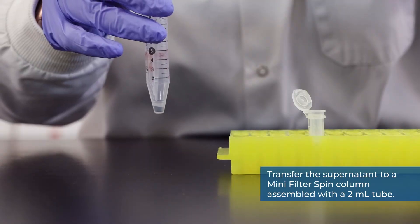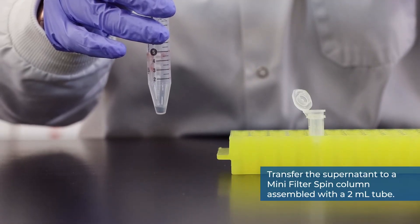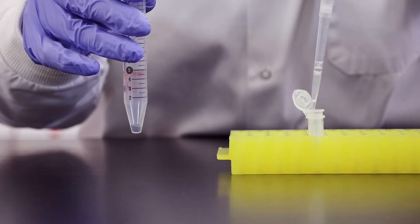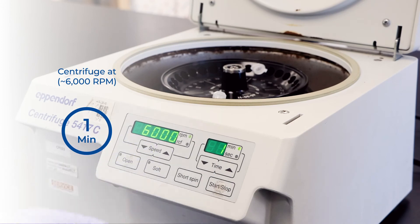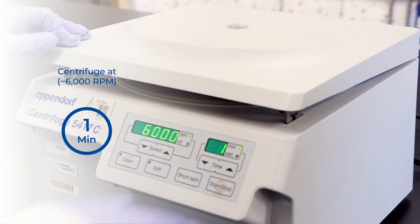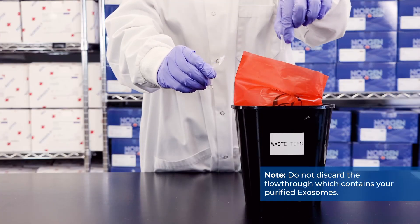Transfer the supernatant to a mini filter spin column assembled with a 2 milliliter tube and centrifuge for 1 minute at 6000 RPM. Do not discard the flow-through which contains your purified exosomes.